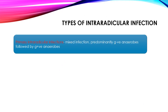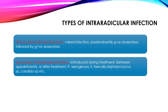Intraradicular infection can be primary intraradicular infections, which are mixed infections predominantly caused by gram-negative anaerobes, followed by gram-positive anaerobes. Secondary intraradicular infections are those which are either induced during treatment when you are treating the tooth for root canal, or in between two appointments if there is leakage of the restoration or because of leakage of the obturating material or restoration material after treatment.